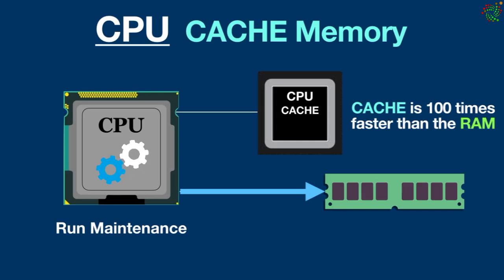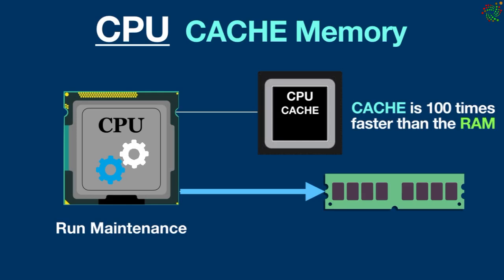One last thing: you cannot delete the CPU cache memory. The reason is that it's a volatile memory. This means that it doesn't keep its contents in the long term. As soon as you switch off the computer, the content in your processor's cache memory is lost.